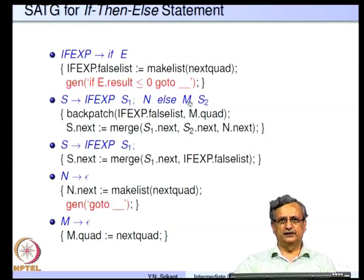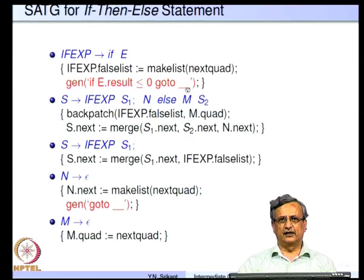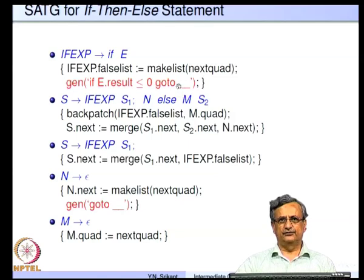M is required to remember the beginning of the code for S2. This is required because if the expression is false we want to jump and execute S2 — we do not want to execute S1 at all. So M remembers the quadruple number of the beginning of S2, that is M dot quad. When we reduce by if-exp going to 'if E', we generate the comparison: if E dot result less than or equal to 0, goto blank (target unknown). This quadruple with its blank target is put on if-x dot false list.